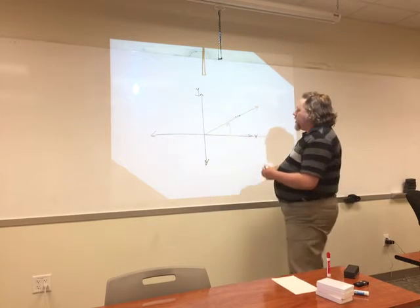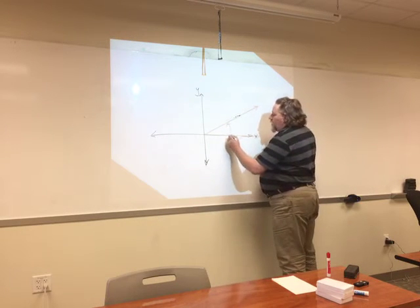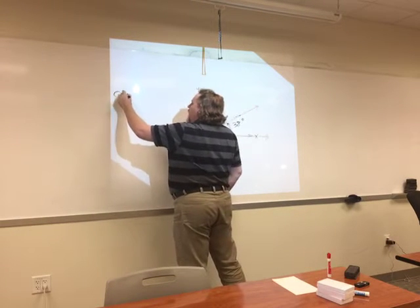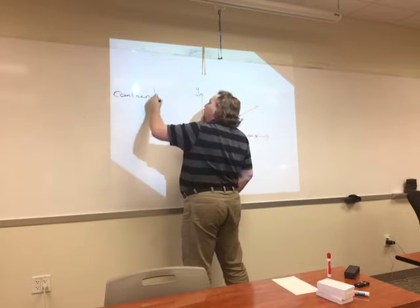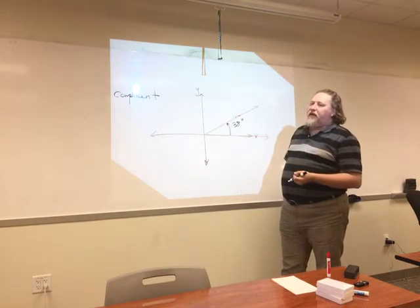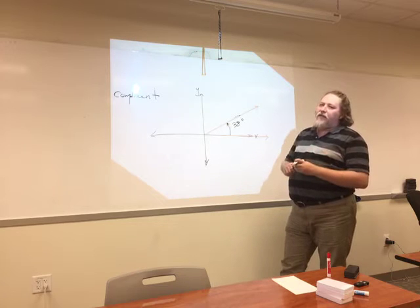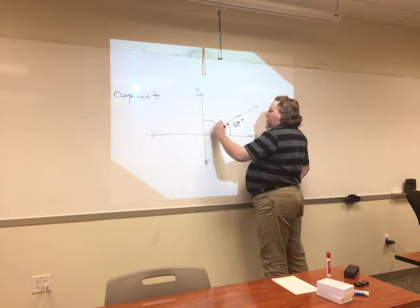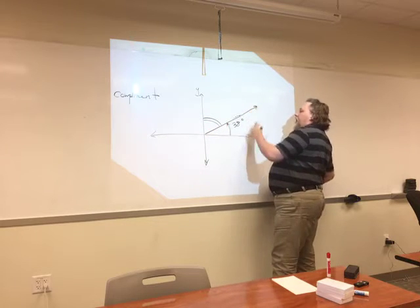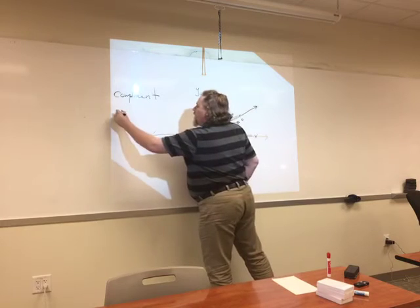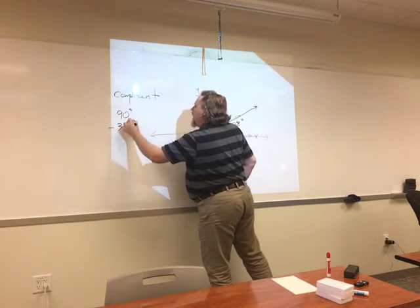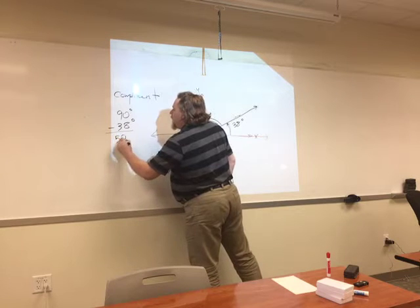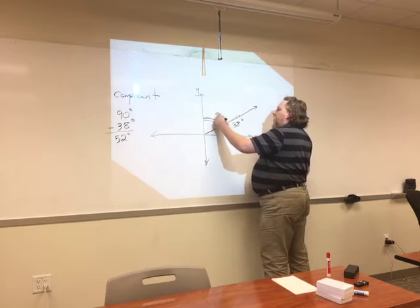Time for a little review from geometry. Suppose this angle is 38 degrees and I ask you to find the complement. Complement means two angles that add up to 90 degrees. So we just do arithmetic: 90 degrees minus 38 degrees gives us 52 degrees. The complement is 52 degrees.